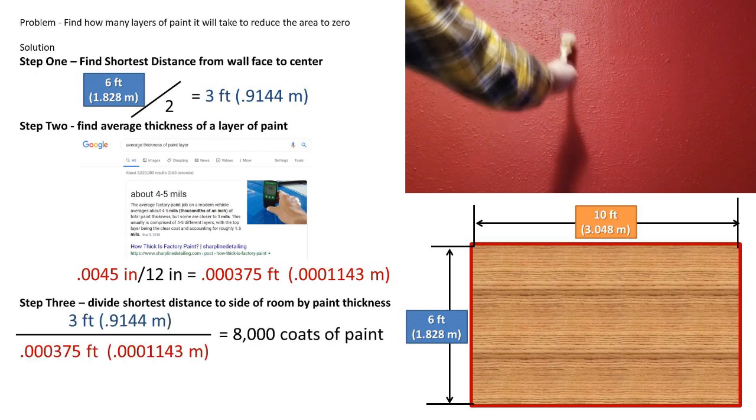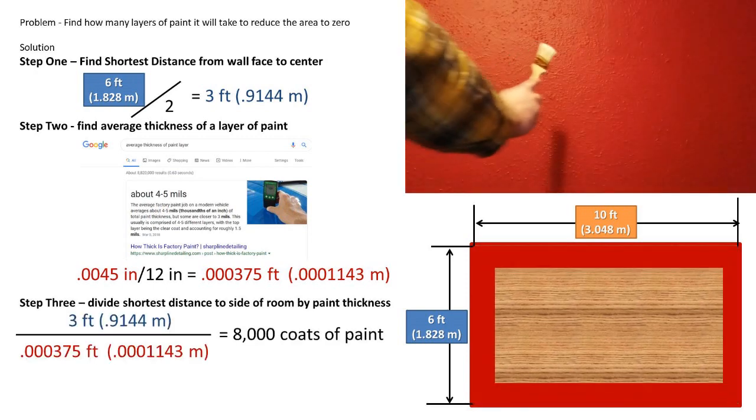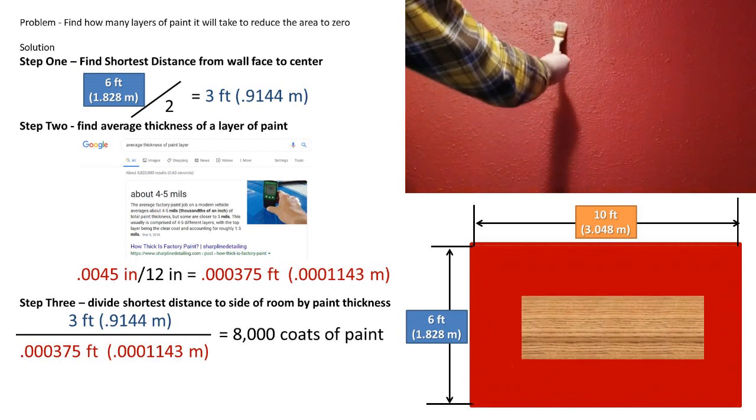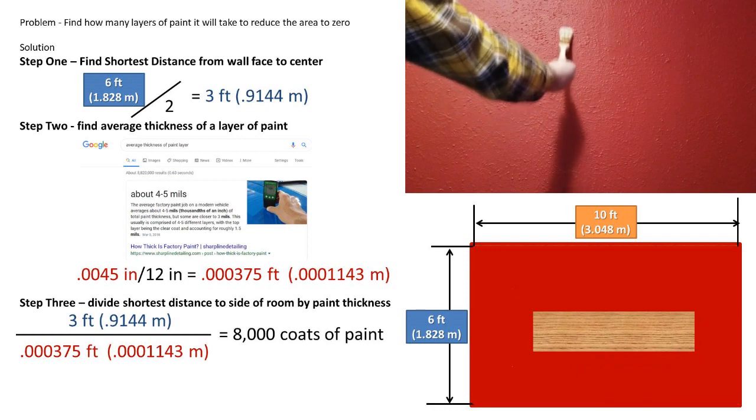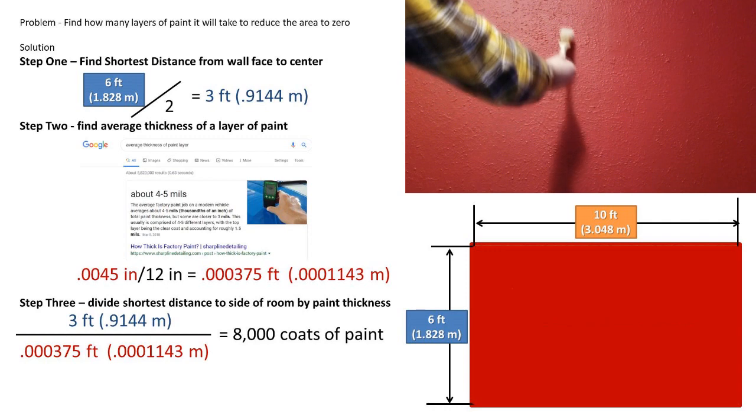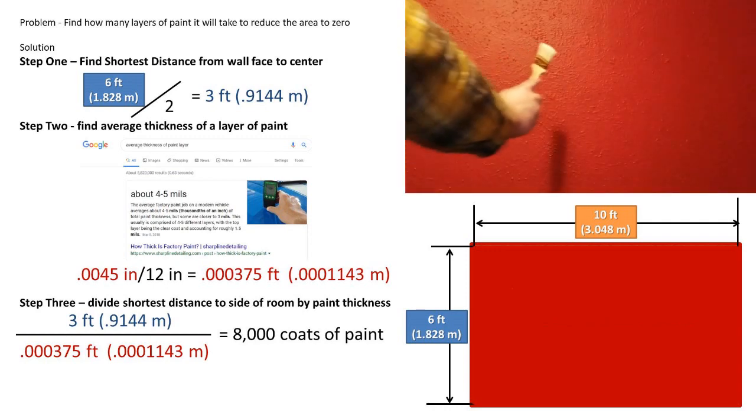For our final step, we must divide the shortest distance to the center by the thickness of one layer of paint. We are left with that it will take 8,000 layers of paint before the room has no square area left. Or in other words, there is no volume of the room and the volume is completely paint.